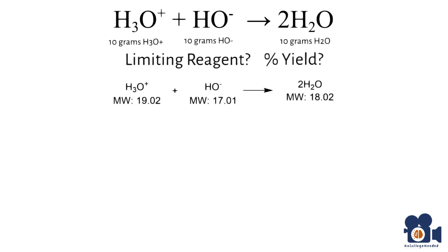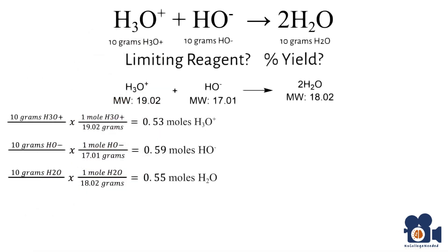The math would look like 10 grams of H₃O⁺ divided by 19.02 equals 0.53 moles of H₃O⁺. 10 grams of HO⁻ divided by 17.01 grams equals 0.59 moles of HO⁻. And lastly, 10 grams of H₂O divided by 18.02 grams equals 0.55 moles of H₂O.